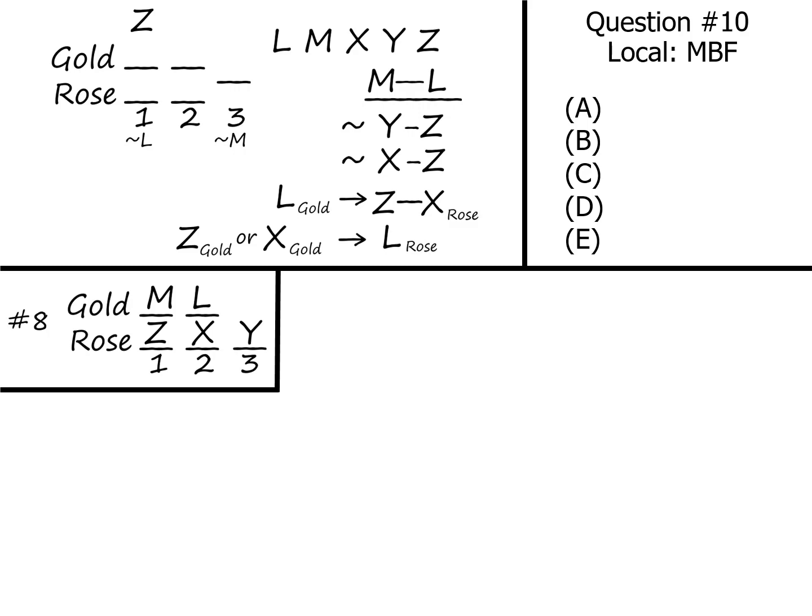Skipping over question 9, we go to 10, which is our first local question. It adds the condition that X is in the 3 p.m. slot.